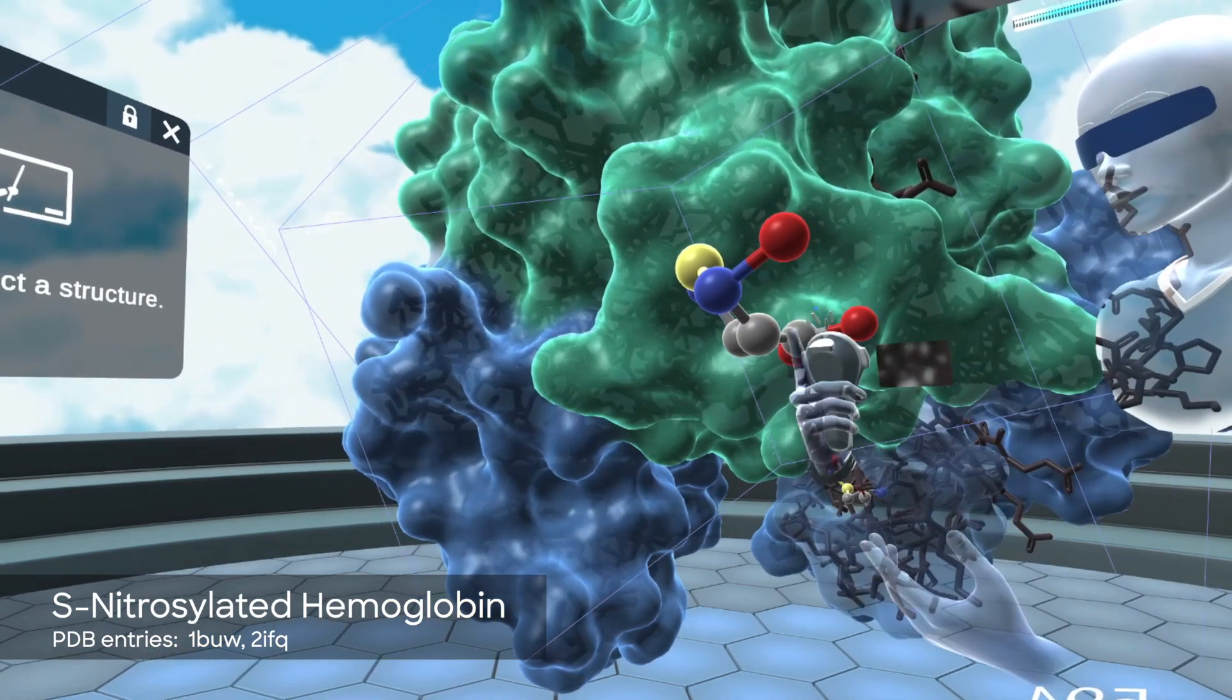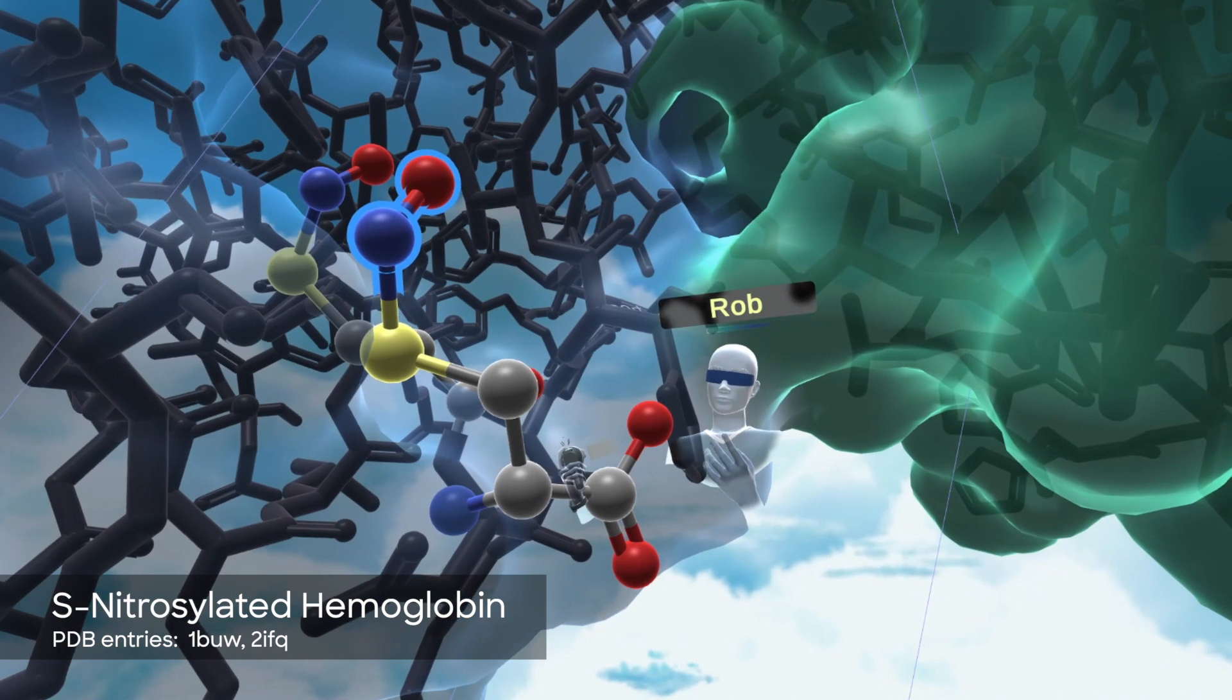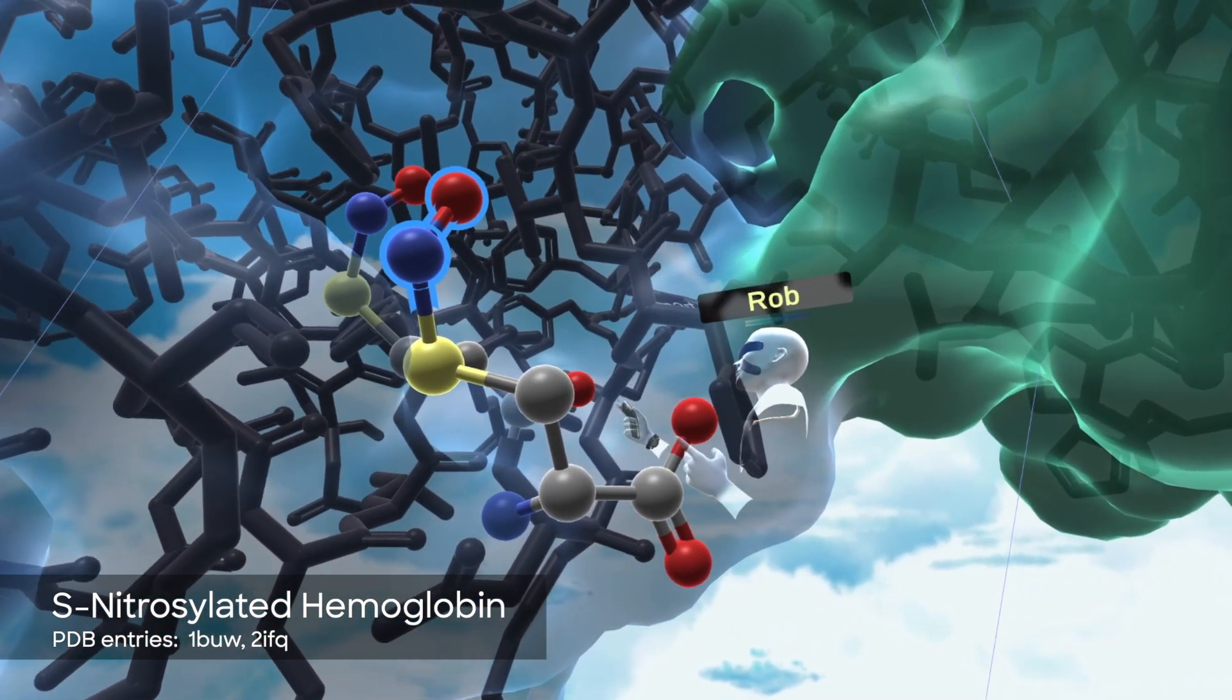Let's take a look at the hemoglobin itself so that we can see nitric oxide bound to the cysteine residue. Here's our cysteine bound to our nitric oxide inside of hemoglobin.